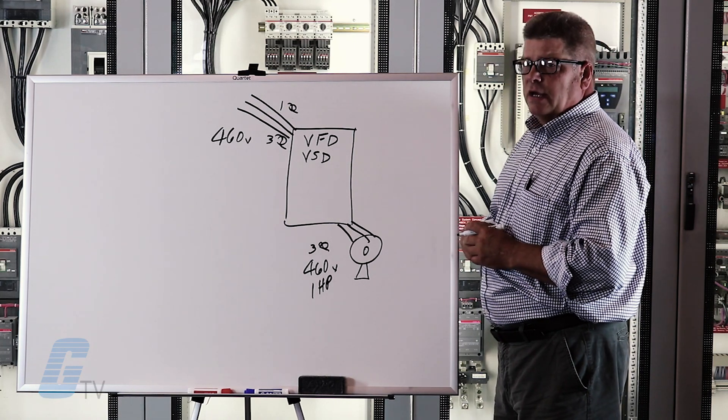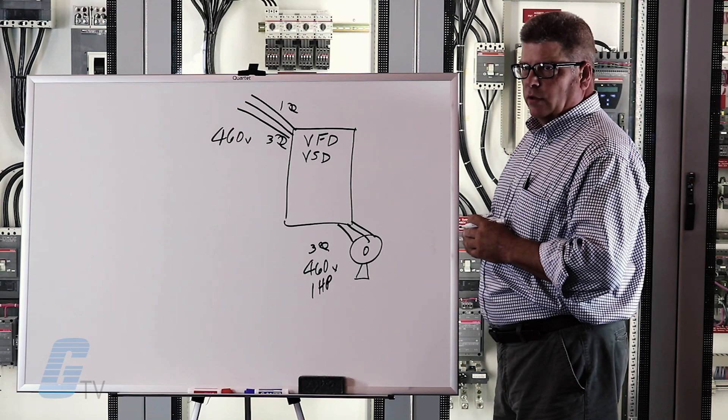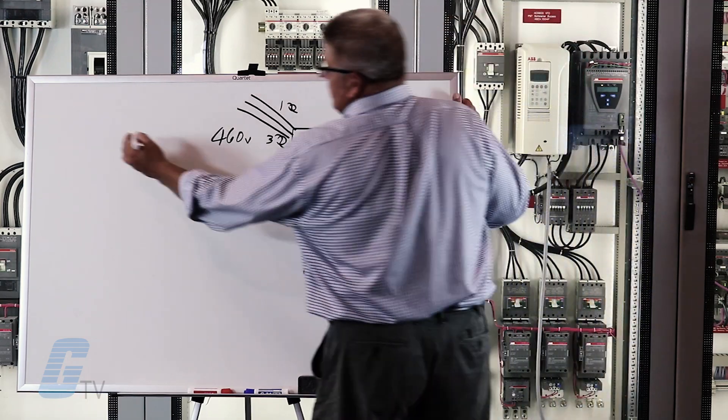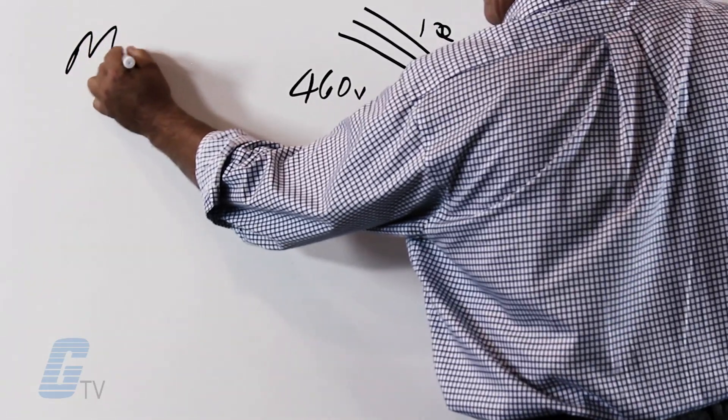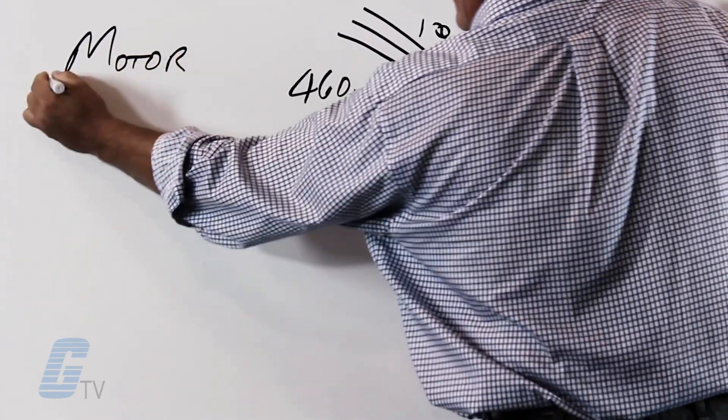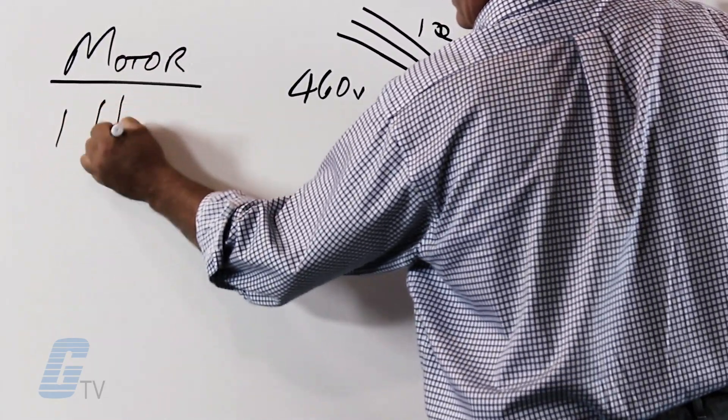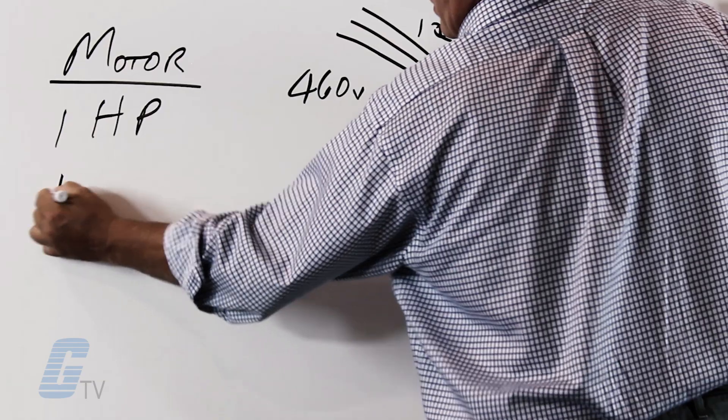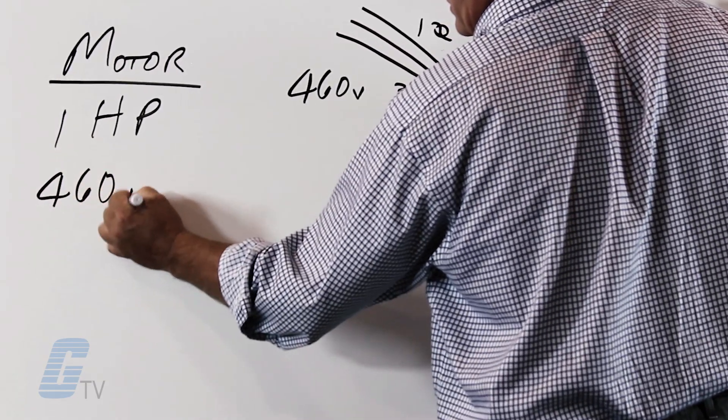Next thing we want to consider is what are the other aspects of the motor data. So our particular motor is 1 horsepower, 460 volts, three phase,